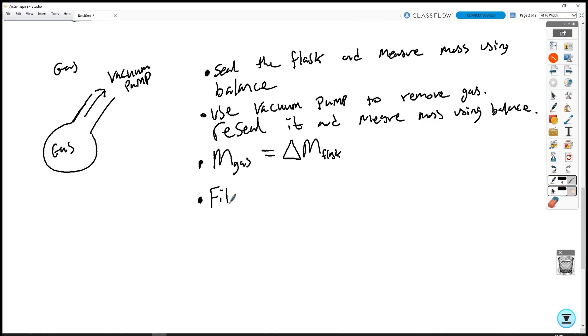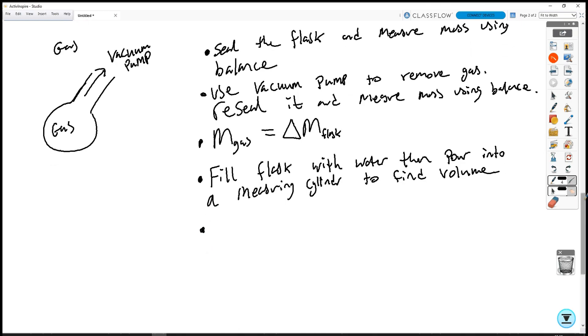Then for the volume, we fill the flask with water, then pour into a measuring cylinder. And then finally, the density is given by rho equals mass over volume. The only two bits that were new or potentially new were the density of a liquid and the density of a gas.